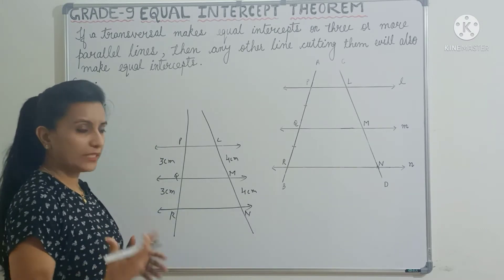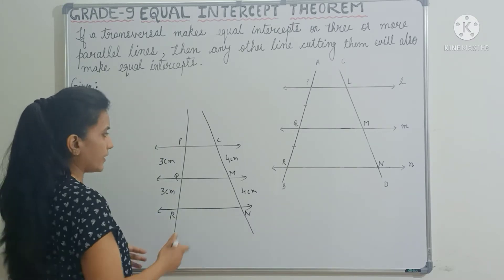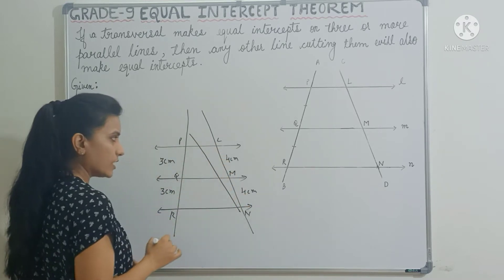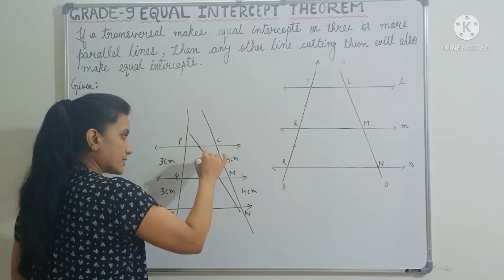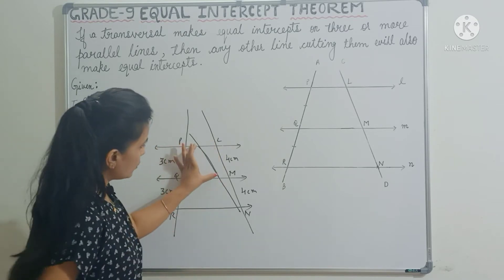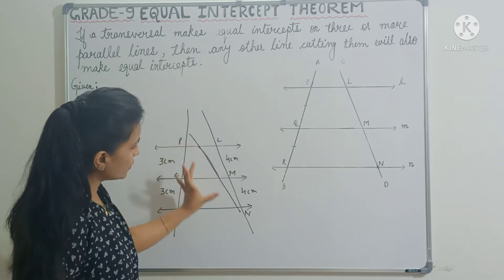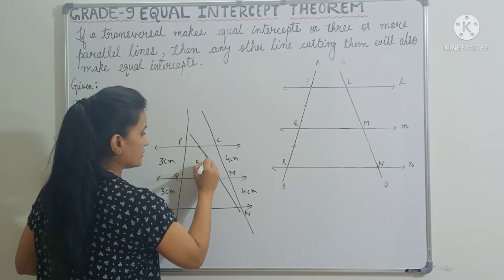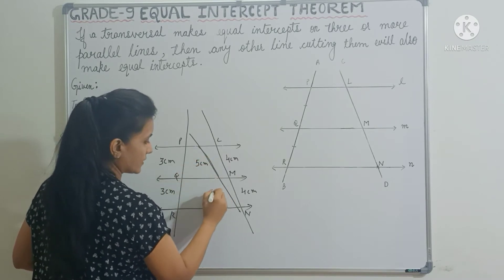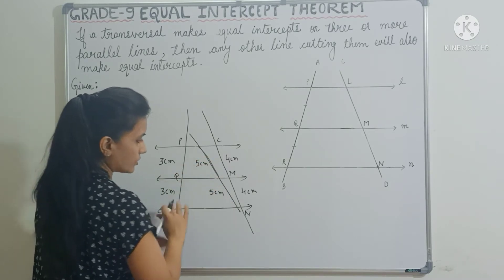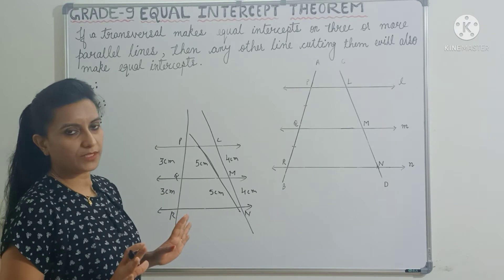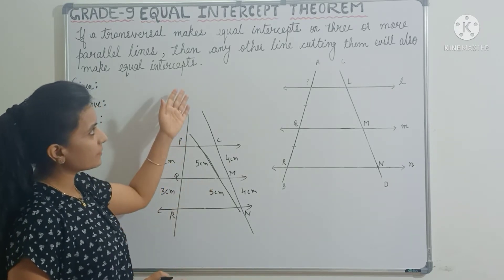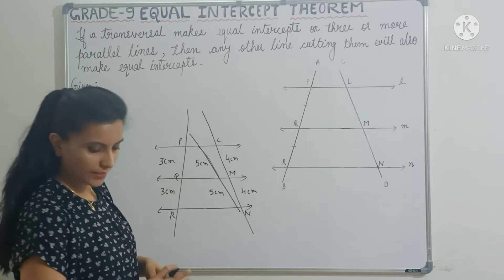You can draw many transversals. For example, you can draw one transversal like this as well. Here also, this length will be equal to this length. So if this is five centimetres, then this will also be five centimetres. This is all about the Equal Intercept Theorem — it's a very simple theorem. Now let's see the statement and proof of the theorem in detail.